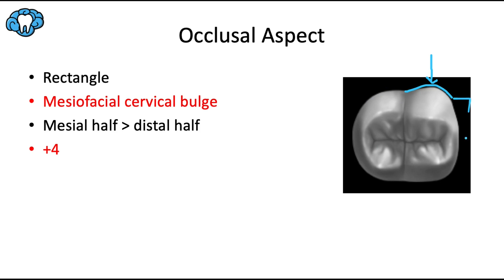The mesial surface is generally a bit more squared, the distal surface is a bit more rounded or convex, and the mesial half of the tooth is slightly wider than the distal half, again thanks to that cervical bulge. I like to think of this tooth as the 'plus four': if you remember the mandibular first molar as Y5 — Y-shaped grooves and five cusps — the second molar is plus four because it has plus-shaped grooves and four cusps.